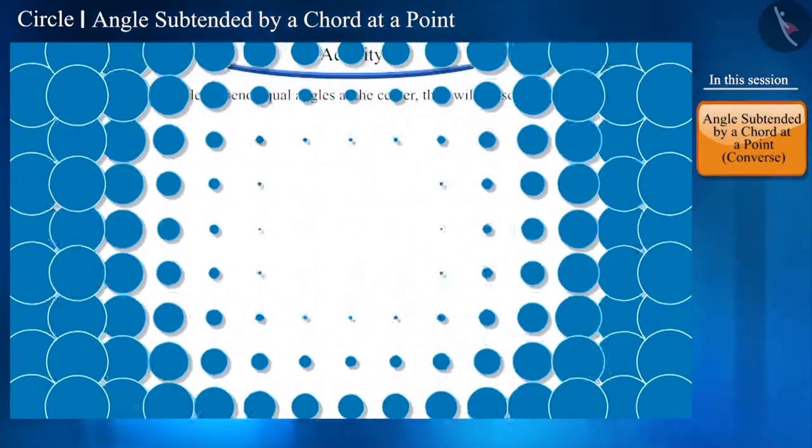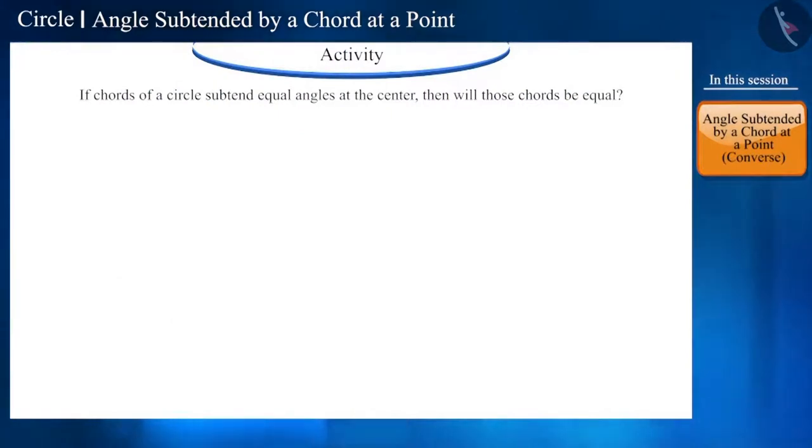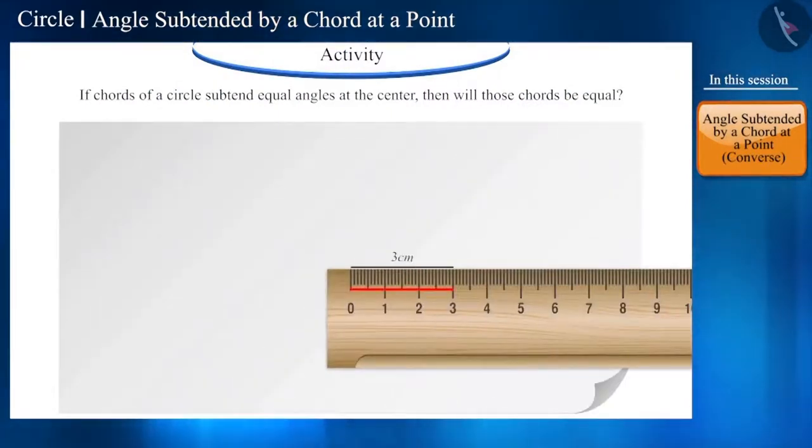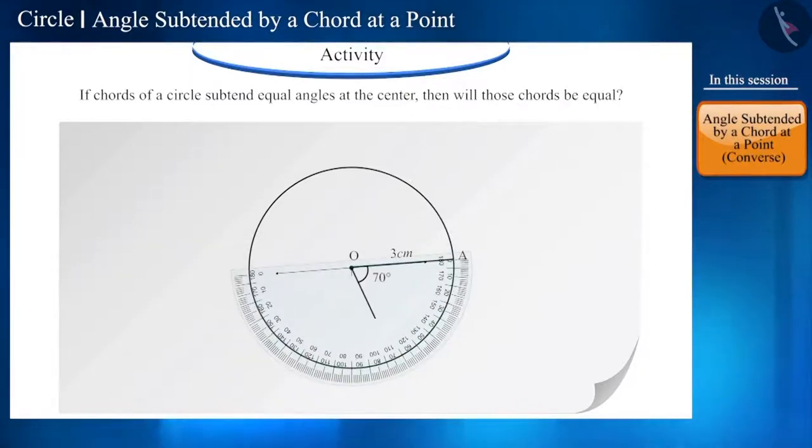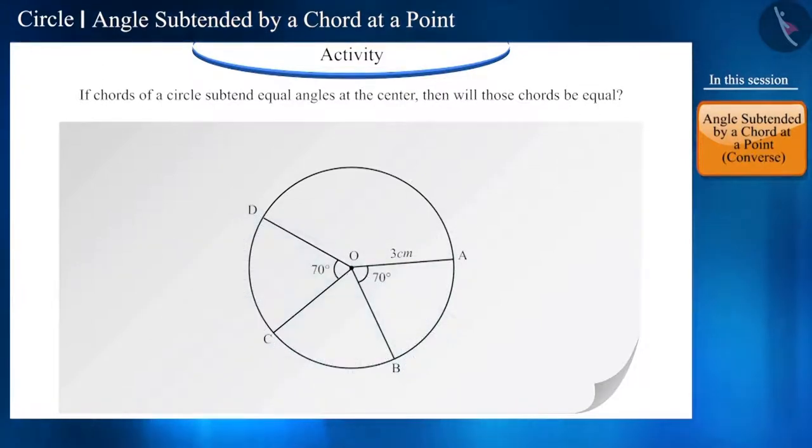Let us find out through an activity. Friends, draw a circle of radius 3 cm on a paper with center O. Now, with the help of scale and protractor, make two angles at the center whose measurement is equal. Here, we have taken the measurement of angles as 70 degrees. You can also make them according to your own preference.